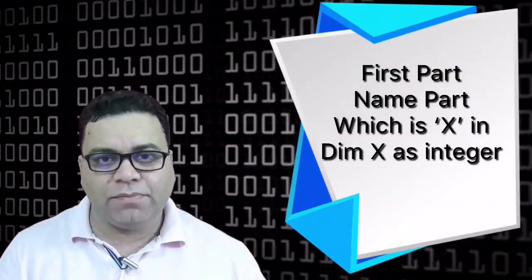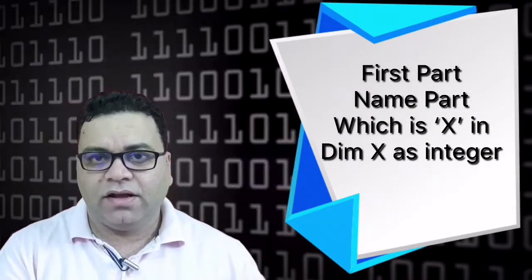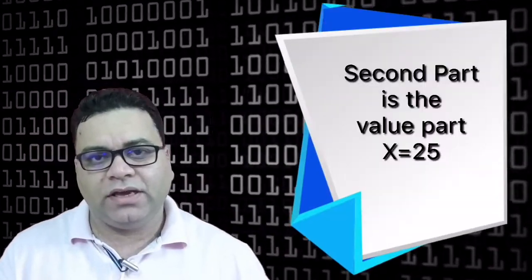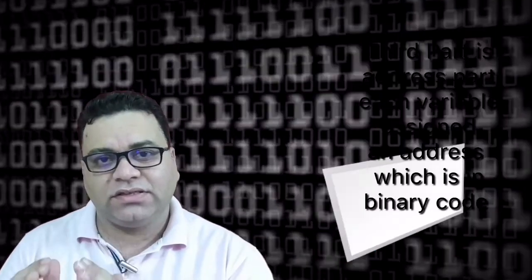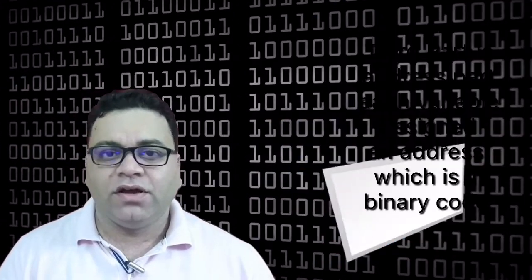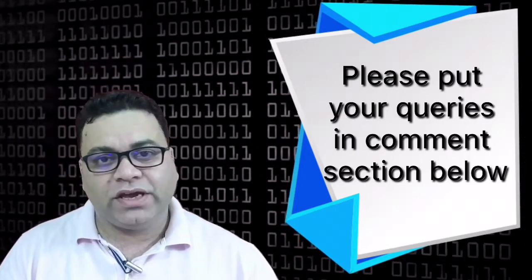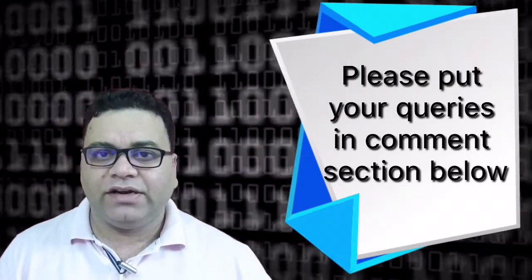Once you define a variable, the system understands it in three sections. For example, if you write 'Dim X As Integer': the first part is the name — you are defining a variable named X; the second part is the value — you assign a value, such as X = 25; the third part is the address — the system automatically defines the memory address where 25 will be stored. When you want to retrieve the data again, the system goes to that binary address and fetches the value.